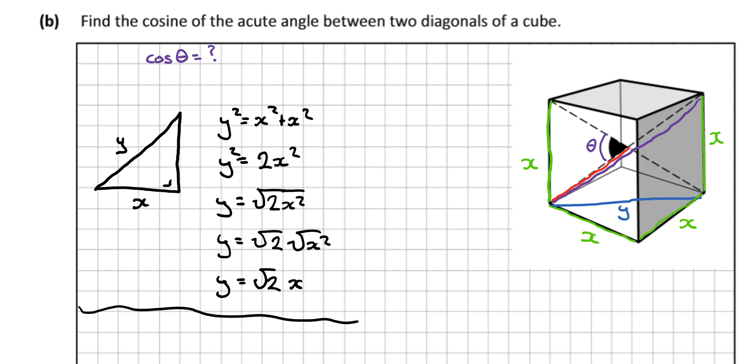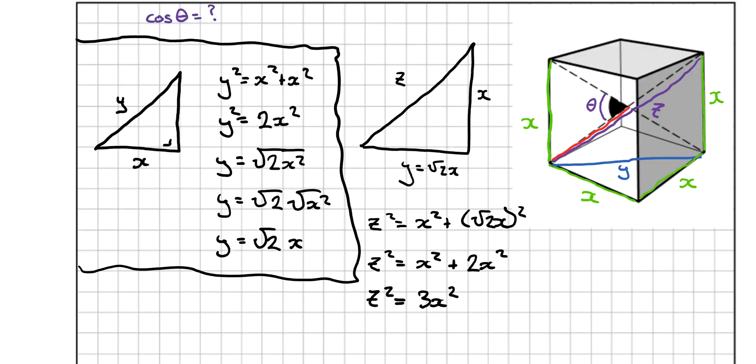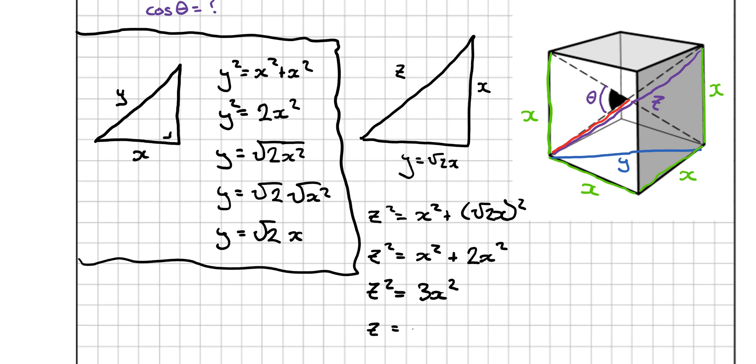So then looking at the second triangle. Let's call the purple length z. y, x, z, but y is equal to root 2x. So z² is equal to x² plus root 2x squared. z² is equal to x² plus root 2 by root 2 is 2, x by x is x², so 2x². z² is equal to 3x². And similarly to here, we can go z is equal to the square root of 3x.